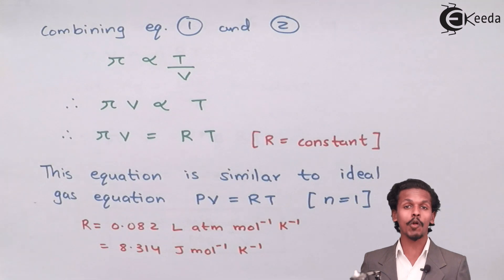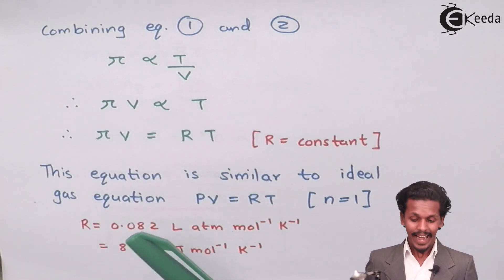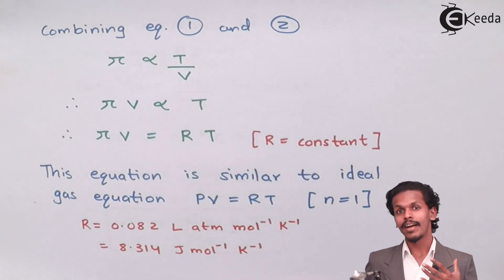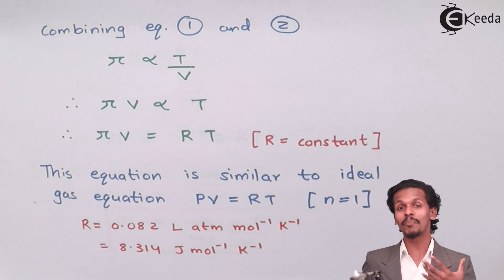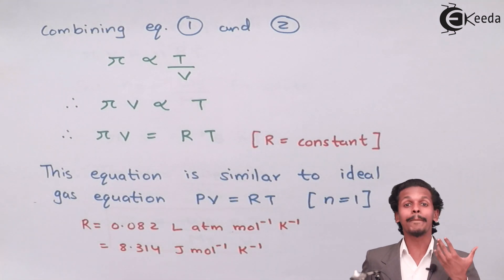To equate it we introduce a constant, and that constant gives us πV equals RT. This equation is related to the ideal gas equation.